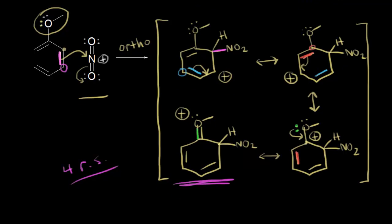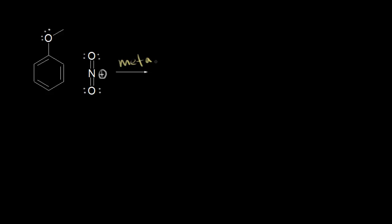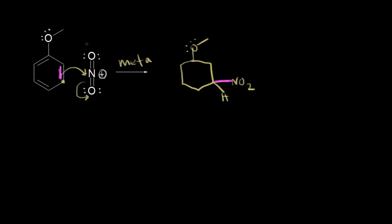That's different from a meta attack. For a meta attack, we add the nitro group to the meta position, using these pi electrons for nucleophilic attack, kicking these electrons off onto our oxygen. Showing the result, the nitro group is in the meta position relative to the methoxy substituent. These pi electrons form a bond with that nitrogen, taking a bond away from the top carbon, so that top carbon gets a +1 formal charge. We have our other pi electrons in the ring.